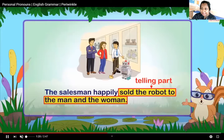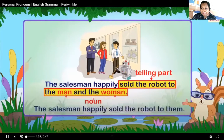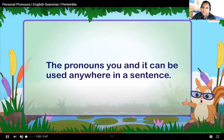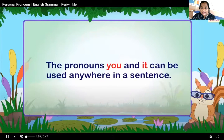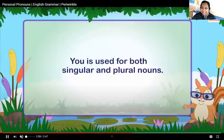'The salesman happily sold the robot to the man and the woman.' Here robot is in the telling part; man and woman are nouns. So: 'The salesman happily sold the robot to them.' The word 'them' is the pronoun. The pronouns 'you' and 'it' can be used anywhere in a sentence. 'You' is used for both singular and plural nouns.